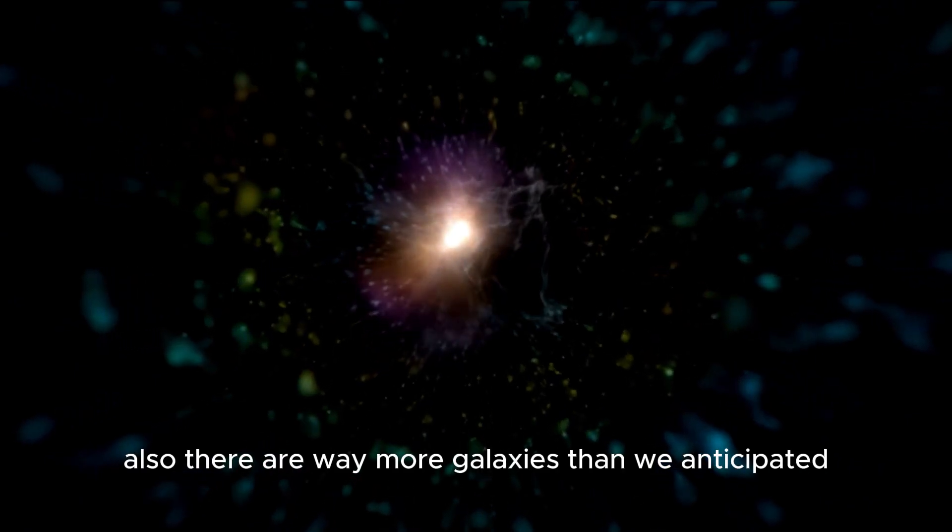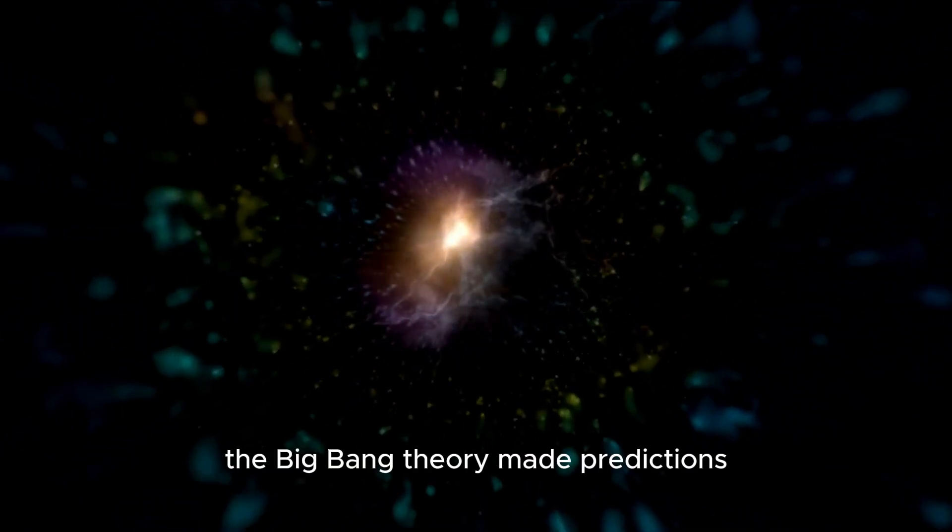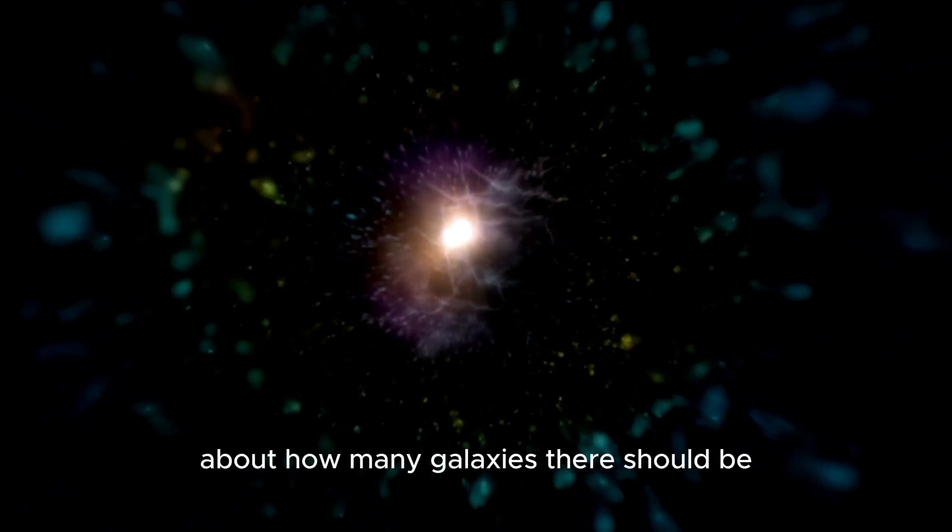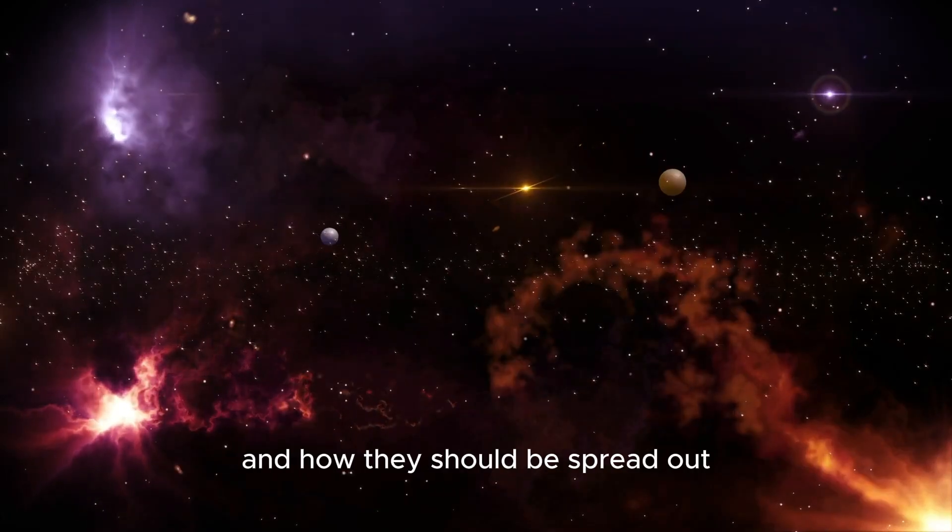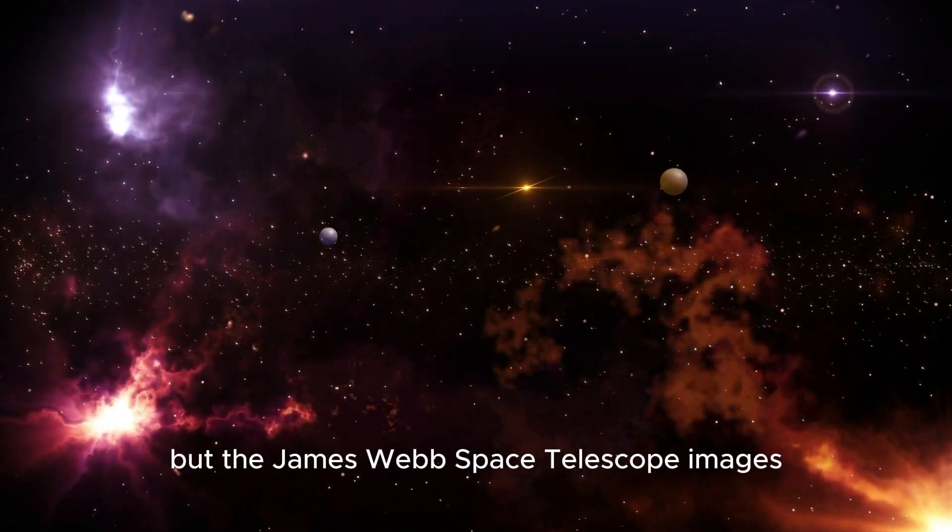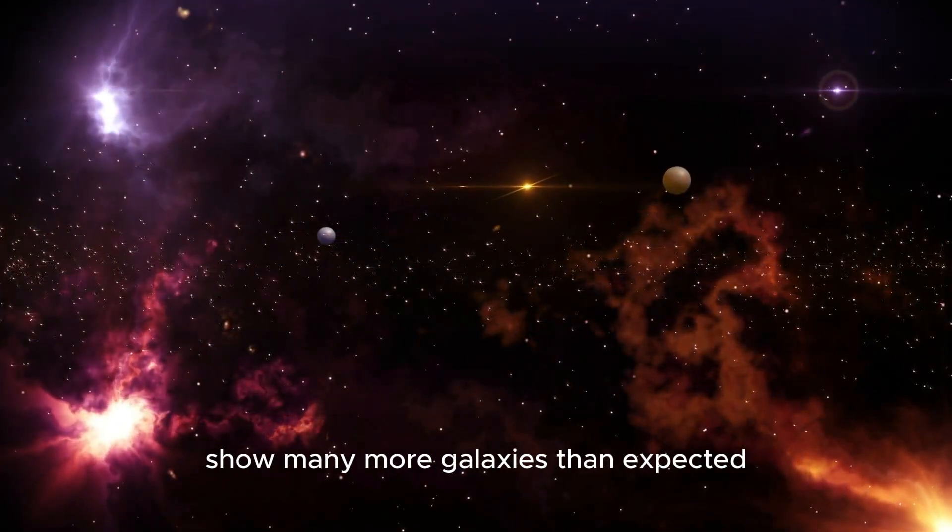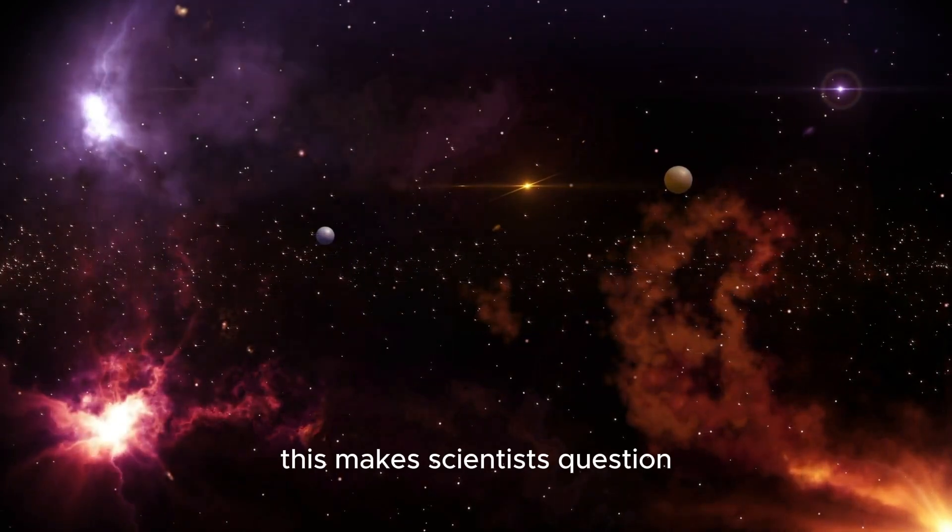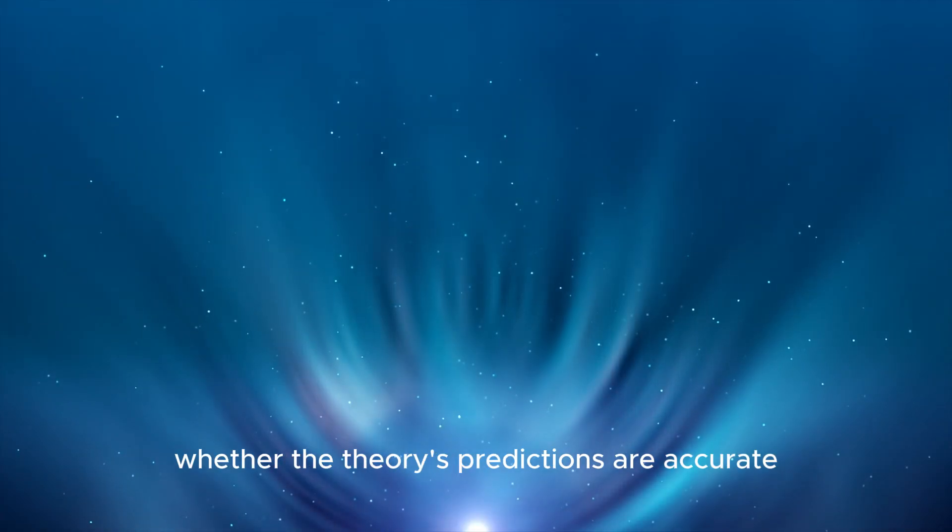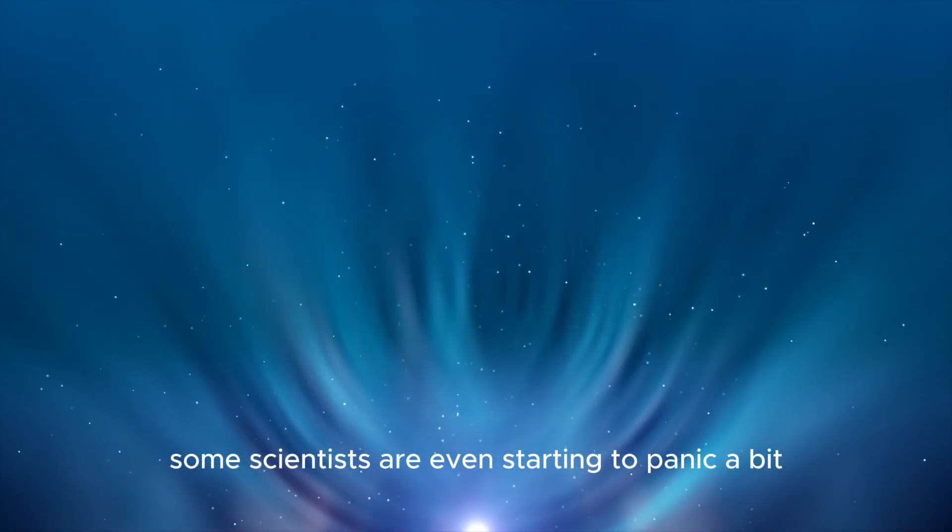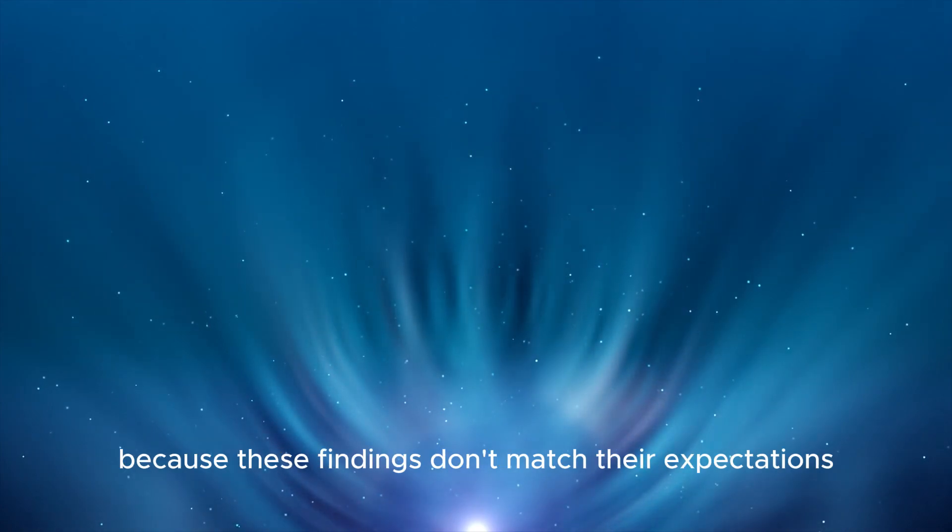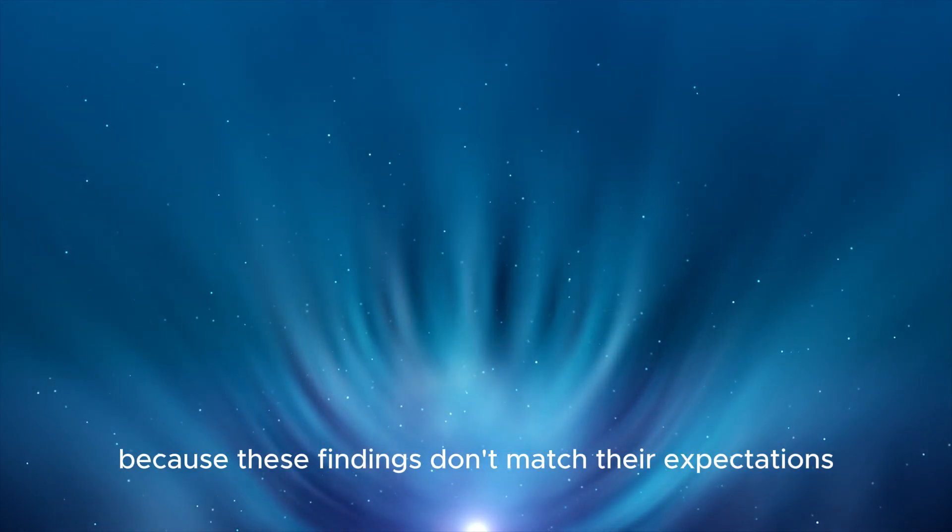Also, there are way more galaxies than we anticipated. The Big Bang theory made predictions about how many galaxies there should be and how they should be spread out. But the James Webb Space Telescope images show many more galaxies than expected. This makes scientists question whether the theory's predictions are accurate. Some scientists are even starting to panic a bit because these findings don't match their expectations at all.